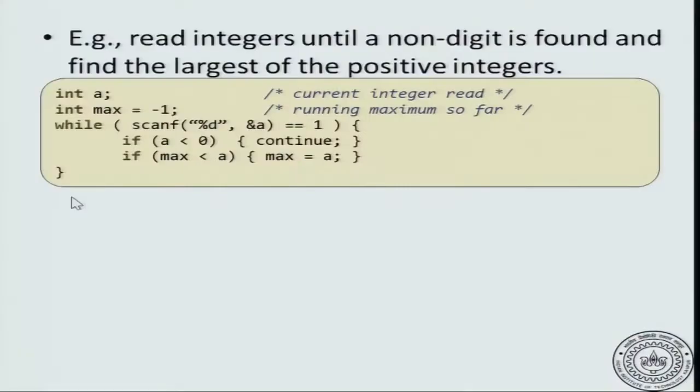Let us go ahead and complete the code. Let us modify the problem a little bit. Read the integers until a non-digit is found and let us do something with the positive integers. Let us say that we have to find the largest of the positive integers. What should we do? Again, let us try to do it by hand to get a feel for what I should be doing. I have 1 minus 1, 2 dot.